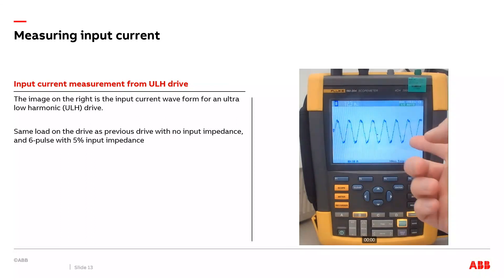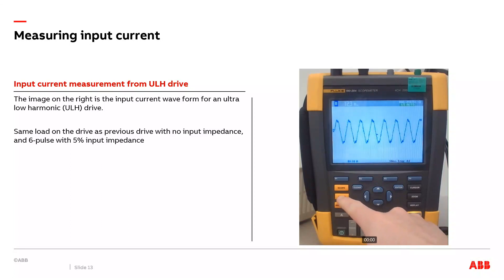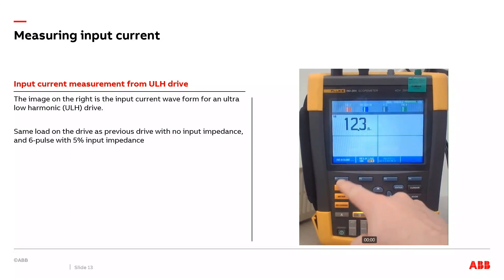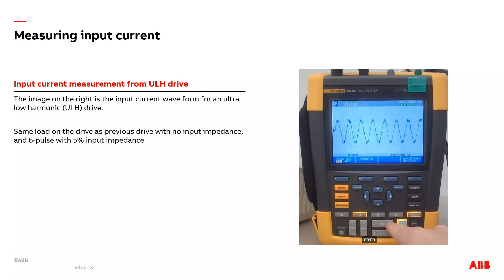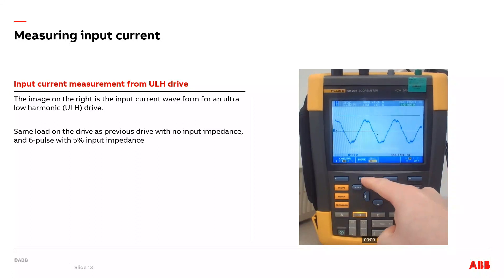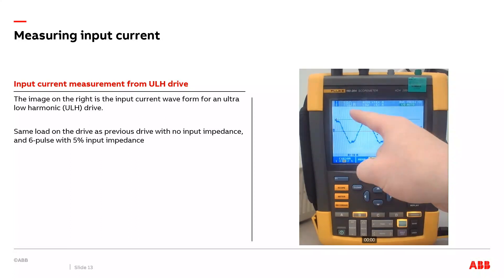Now, let's look at the input current on a ULH, or ultra-low harmonic drive. Here, you can see the RMS input current is 12.3 amps. You can also see that this input current waveform is very much sinusoidal, which is expected as we have a low harmonic drive. And here, I look at the peak current. You can see it's around 18 amps, which is what it would be expected, being that it's a ULH drive.